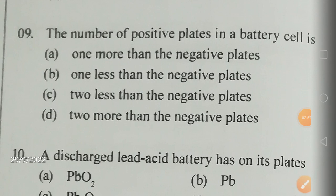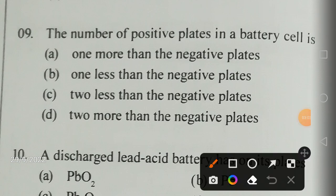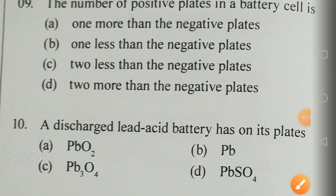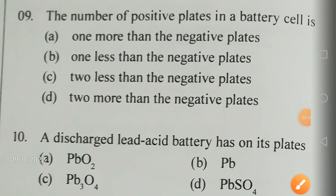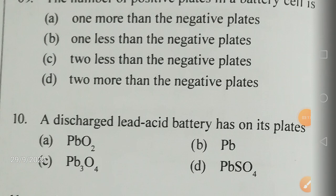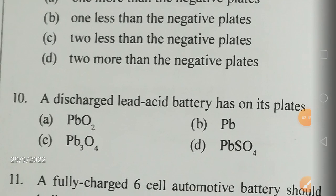The number of positive plates in a battery cell is one less than the negative plates. For example, if the negative plates are six, positive plates should be five. The number of positive plates is always one less than the number of negative plates.